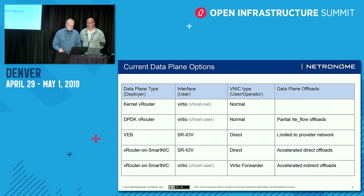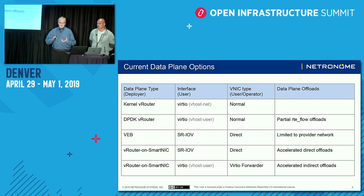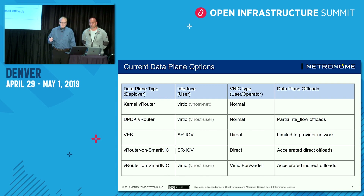On this slide, in the first column, you'll see the data plane options available to you as a deployer. The kernel vrouter is an out-of-tree kernel module, similar in function to the Open vSwitch kernel module, and it provides an in-kernel data plane. The DPDK vrouter is a user-space data plane and it provides partial offload with RTE flow.